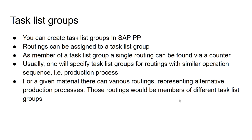Then there is the topic of task list groups. A routing is basically a type of task list, and when you create a routing you can assign it to a task list group. Usually you will be defining task list groups based on production processes, so routings mapped to the same task list group will usually have a similar sequence of operations, meaning they represent a similar production process.